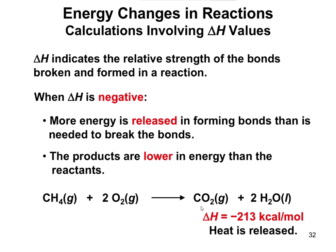When delta H is negative, it basically means that more energy is released when you form the bonds than when you break the bonds, and the products are lower in energy than the reactants.